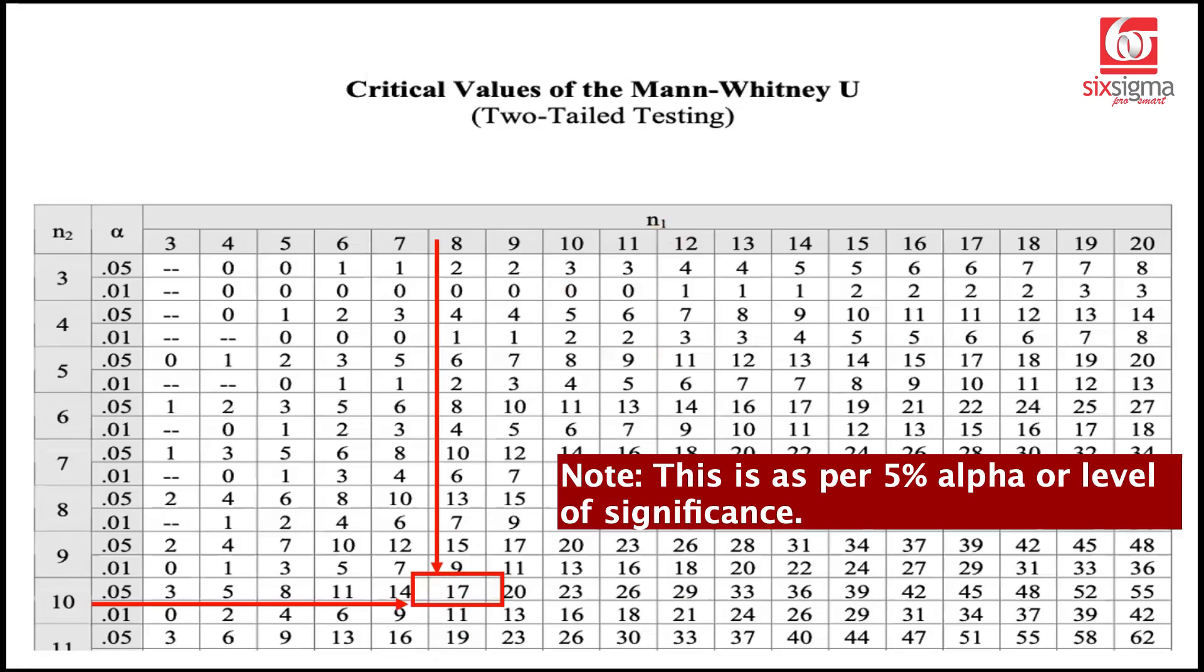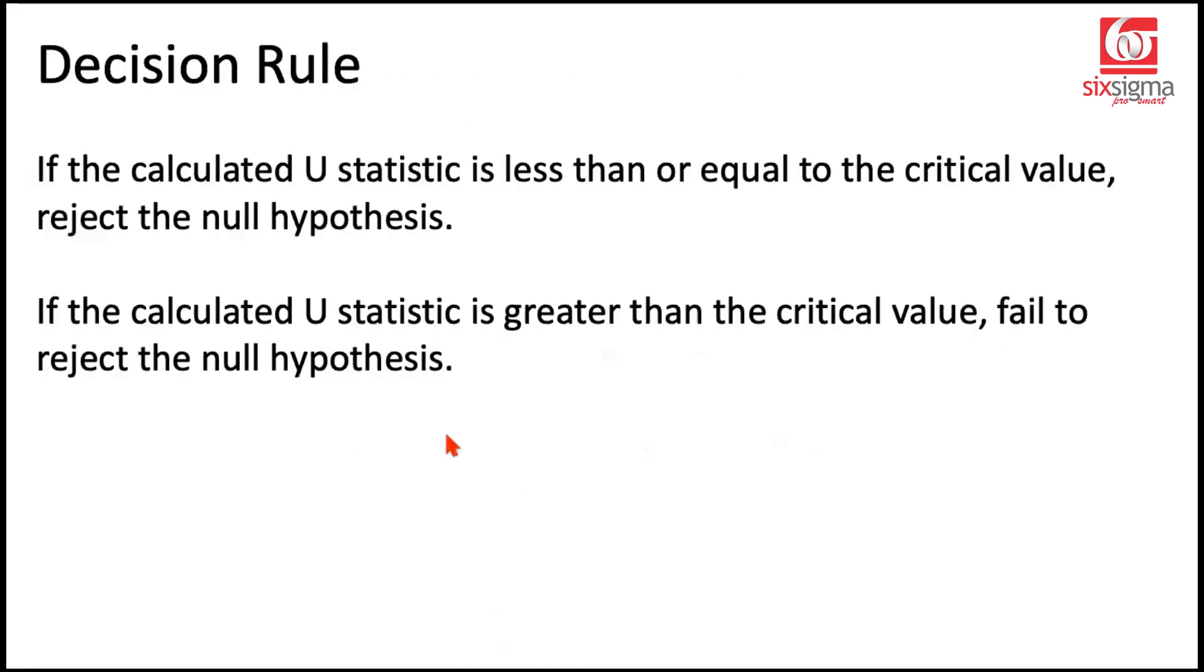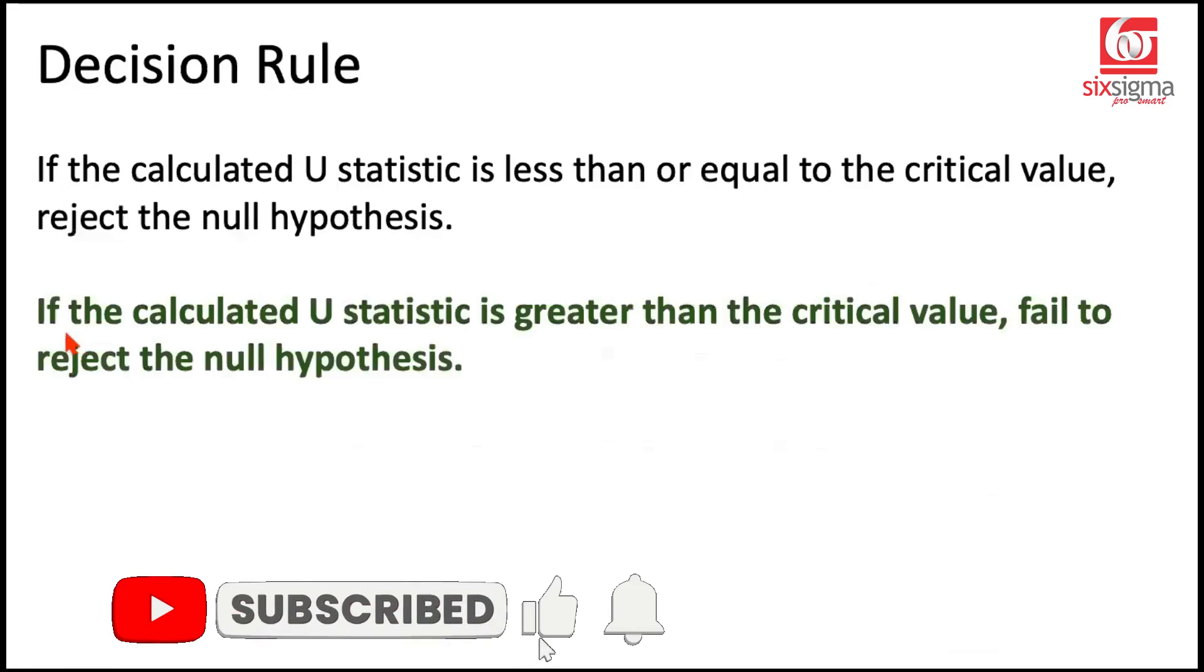What is the decision rule? Our test statistic was 35 and the critical value is 17. If the calculated U statistic is less than or equal to the critical value, reject the null hypothesis. Our calculated U is 35, and the critical value is 17, so this is not the scenario. If the calculated U statistic, which is 35, is greater than the critical value, which is 17, we fail to reject the null hypothesis. Our conclusion is that with this given data, at 95% confidence using the Mann-Whitney U test, we fail to reject the null hypothesis, which means the two groups seem to have comparable medians.